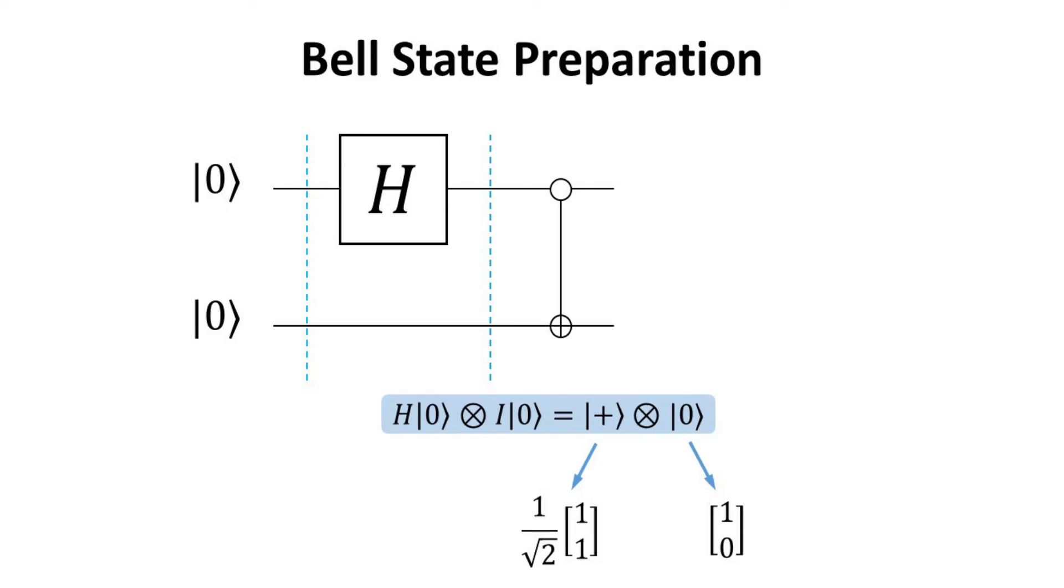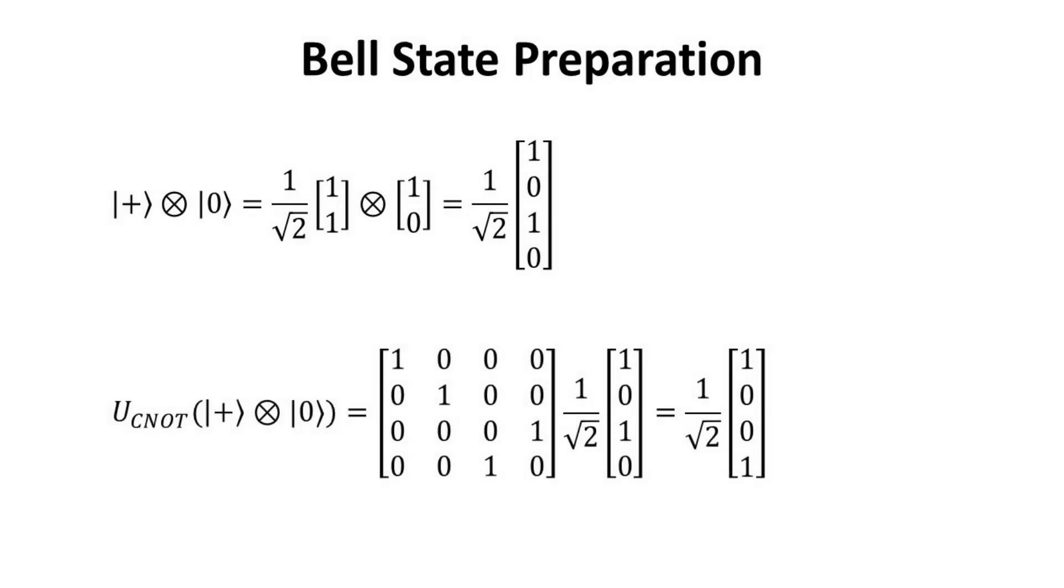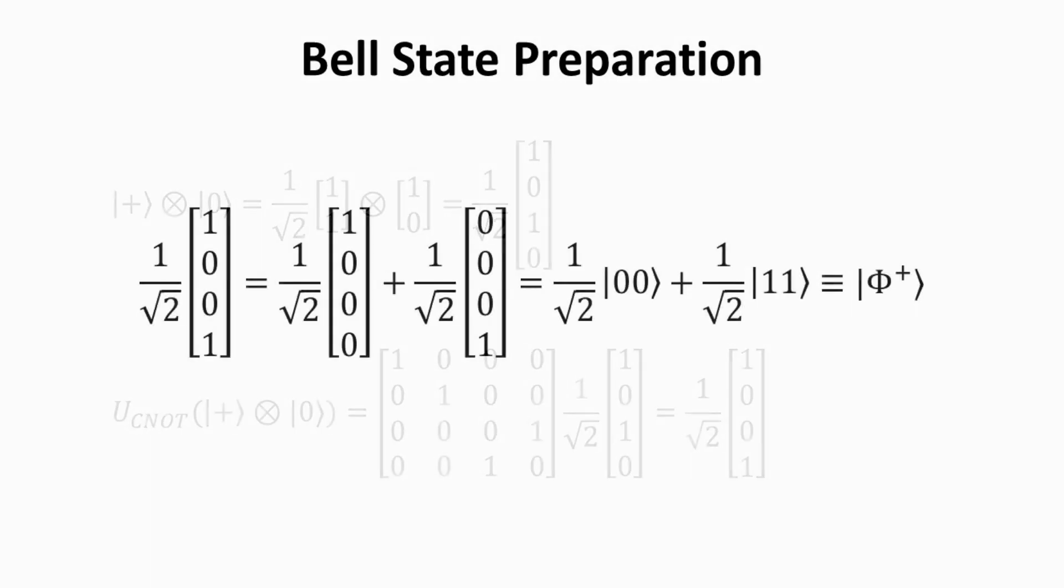In the next step, the Hadamard gate is applied to the first qubit with no action on the second qubit. When H acts on the 0-Ket, it becomes the plus-Ket. Working out the tensor product explicitly, we obtain the following 4 by 1 column vector. Then we apply the CNOT gate, whose matrix form was shown in part 3 of this video. The resulting vector can be expressed as superposition of the two qubit basis states as follows.